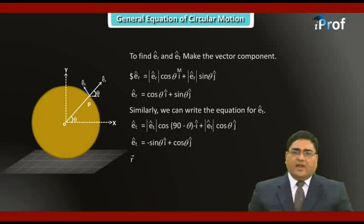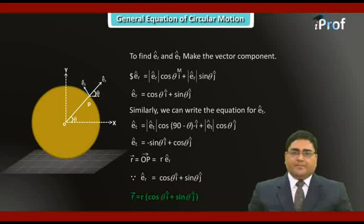We can write small r vector equal to R times ER cap, where small r is the magnitude of R vector. Since ER cap is equal to cos theta I cap plus sin theta J cap.